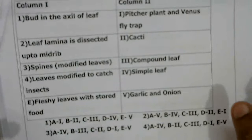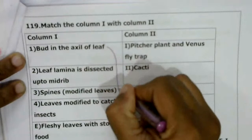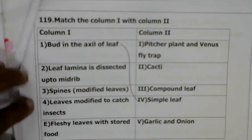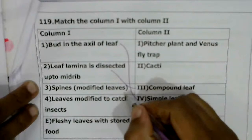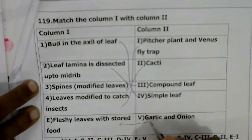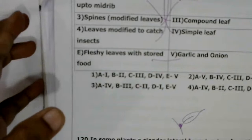Next question — match the column: bud in the axil of a leaf = simple leaf; leaf lamina dissected up to mid-leaf = compound leaf; spines (modified leaves) = cactus; leaves modified to catch insects = pitcher plant; fleshy leaves with stored food = garlic and onion. The matching gives: A-4, B-3, C-2, D-1, E-5. The correct answer is the third option.